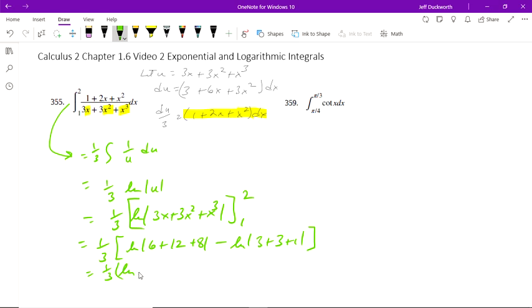This is ln of 26 minus ln of 7, and we can rewrite this as 1/3 ln of 26 over 7 by using the properties of logarithms. We have a difference of two logarithms, which means we can take a quotient of the first over the second.